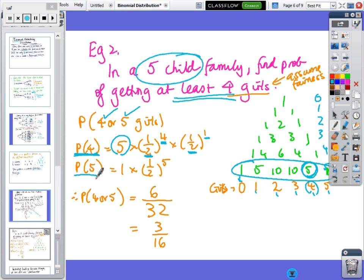For five girls, there's only one way that can happen: (1/2)⁵. Then you add those two answers together because both are correct. P(at least 4 girls) = 6/32 = 3/16.